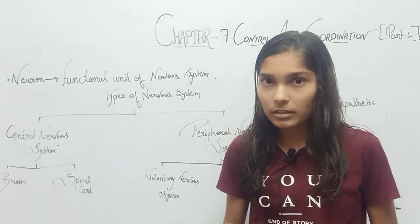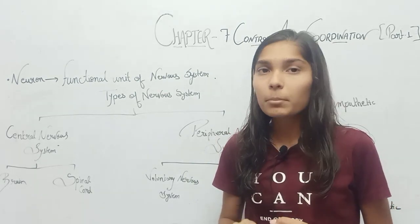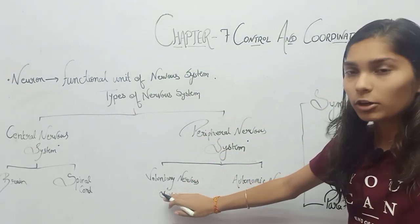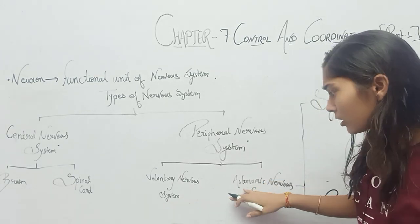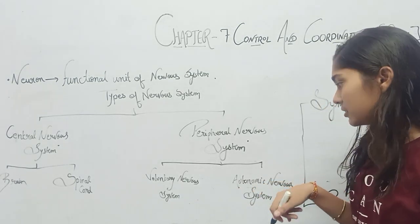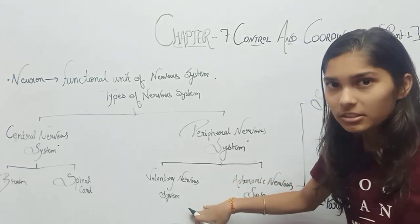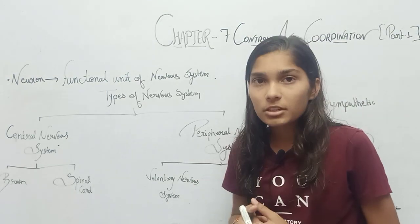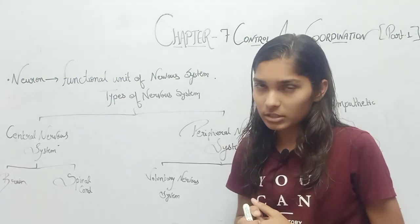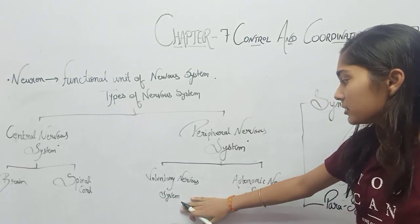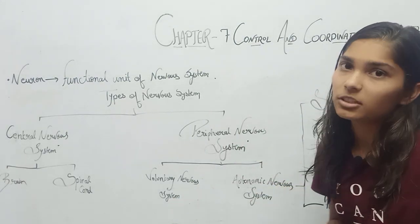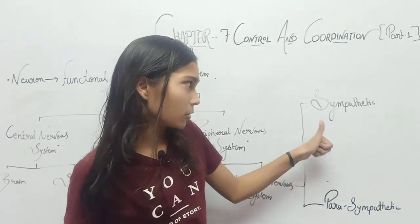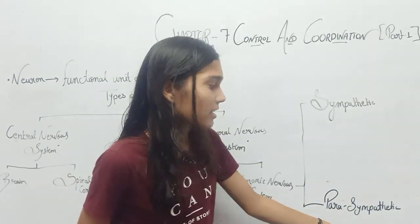The nervous system has two types: Central and Peripheral. The Peripheral Nervous System includes the Voluntary Nervous System and the Automatic Nervous System. The Automatic Nervous System is further divided into Sympathetic and Parasympathetic.